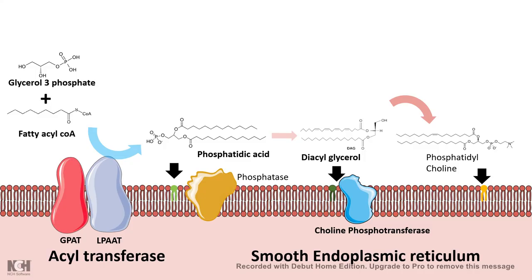So all the biosynthesis of fatty acids takes place in the cytoplasm, and the overall process of making membrane phospholipids takes place on the surface of the endoplasmic reticulum. The raw materials — derived from the glycolytic pathway and the fatty acid biosynthetic pathway — are assembled on the membrane of the smooth endoplasmic reticulum. That is how this important biosynthetic pathway takes place inside our cells.